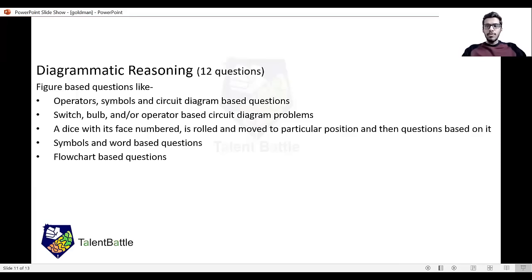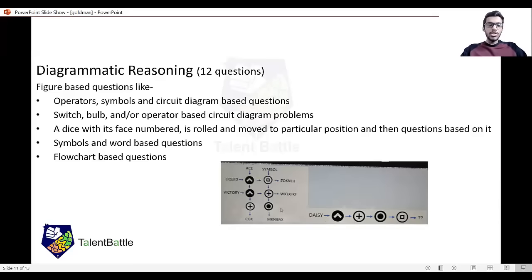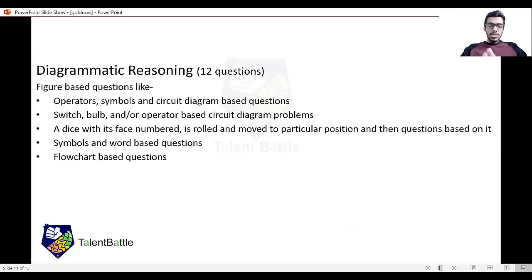Then there was a dice which had its faces numbered, and the dice was rolled or moved to a particular position on a graph, and then questions based on it were asked. Then there were questions where a word was given in between, there were symbols, and then a question mark. Flowchart-based questions were also there.